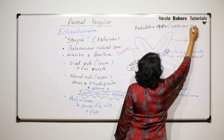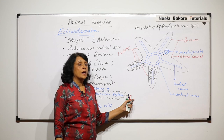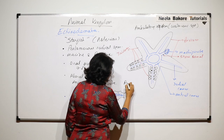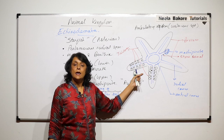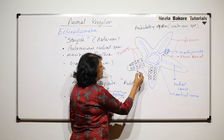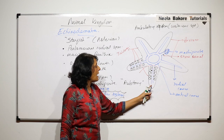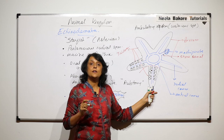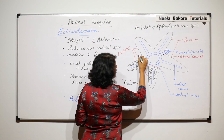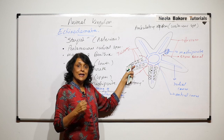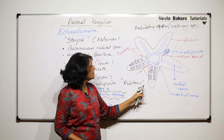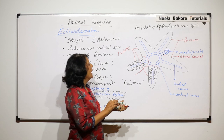One more feature seen in starfishes is autotomy — they can cut off an arm in self-defense. This arm can be cut in two different ways. If the arm is cut in one way, the arm will degenerate and the animal, now with four arms, will regenerate the fifth one. But if the arm is cut differently, the four-armed animal will regenerate the fifth arm, and the cut arm will also regenerate the remaining body.